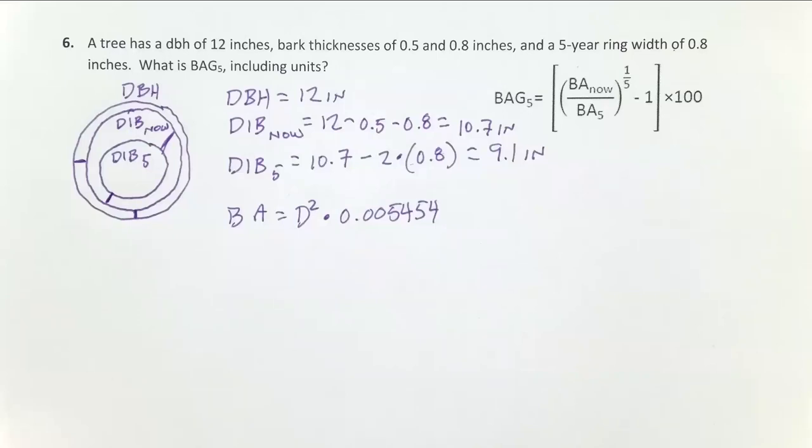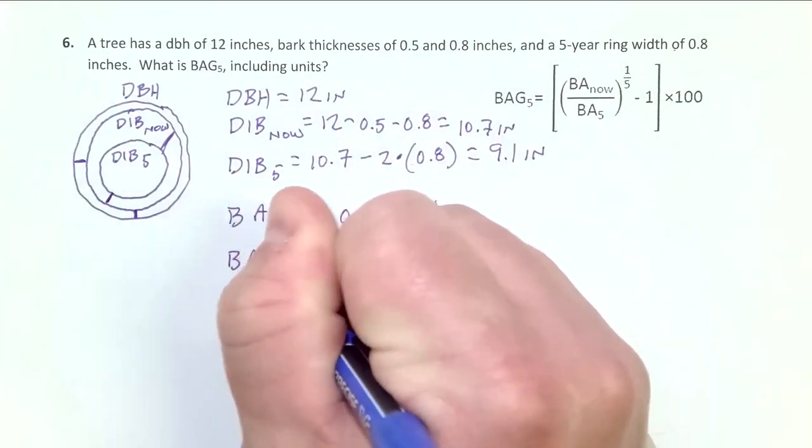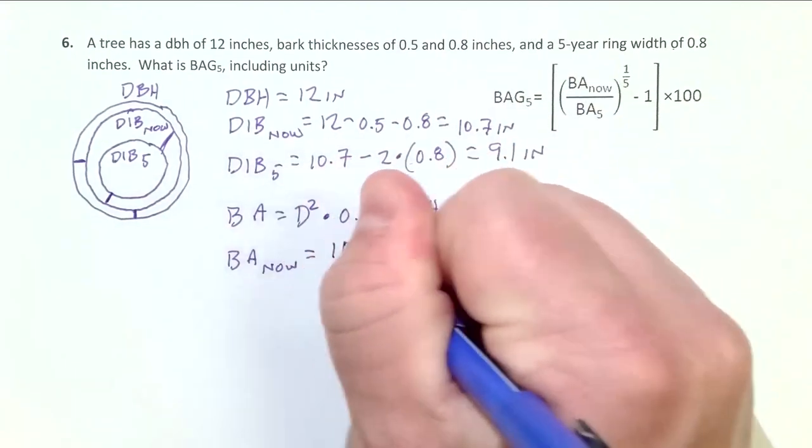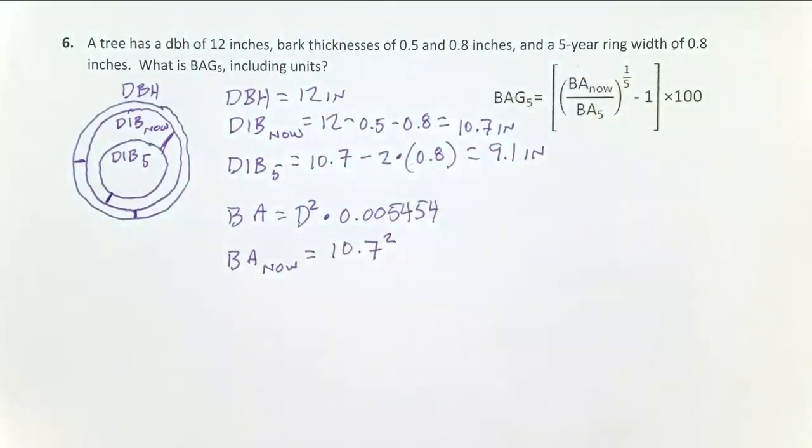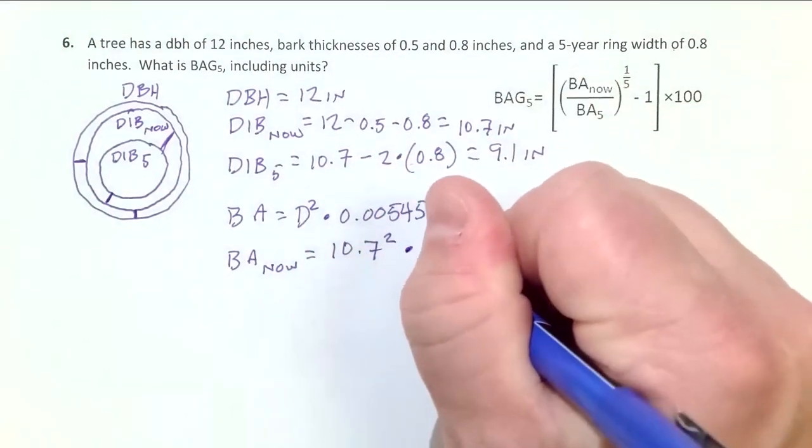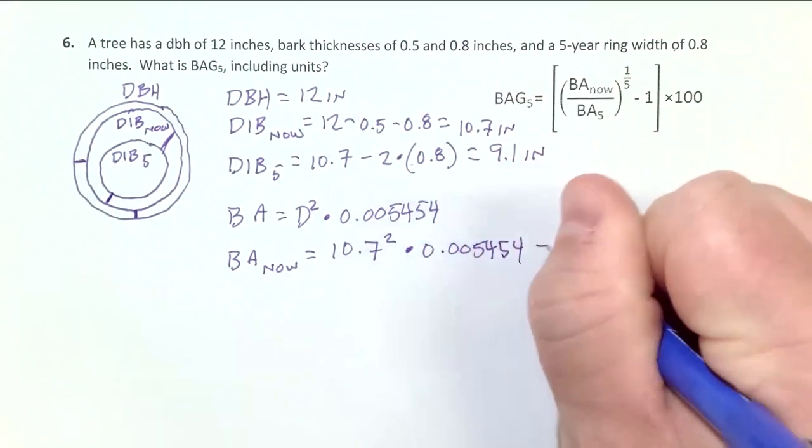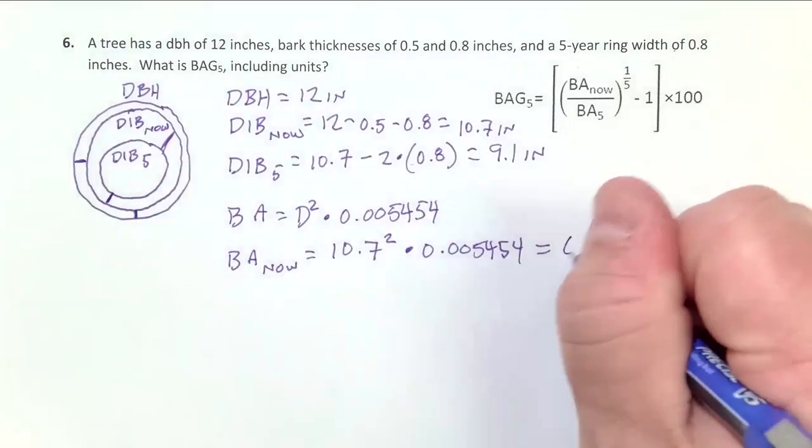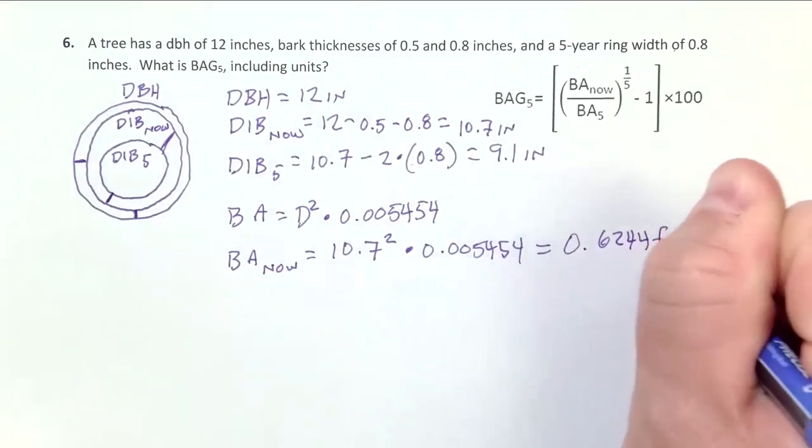Now we can start calculating these basal areas. Basal area now is going to equal diameter inside the bark now, 10.7 inches, squared, and then we multiply it by 0.005454. Punching that into the calculator, remember the order of operations: square this quantity, then multiply it. That equals 0.6244 feet squared.